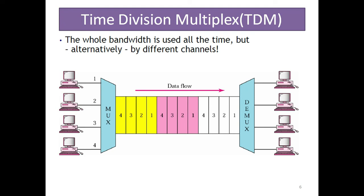Next is time division multiplexing (TDM). In FDM, the whole bandwidth is divided into small frequency bands allocated to specified users only — another user cannot use that frequency band. But in TDM, the whole bandwidth is used by each and every user for a specified or allocated time only. Once that time is over, that band can be used by another user. The whole bandwidth is used all the time but alternatively by different channels.